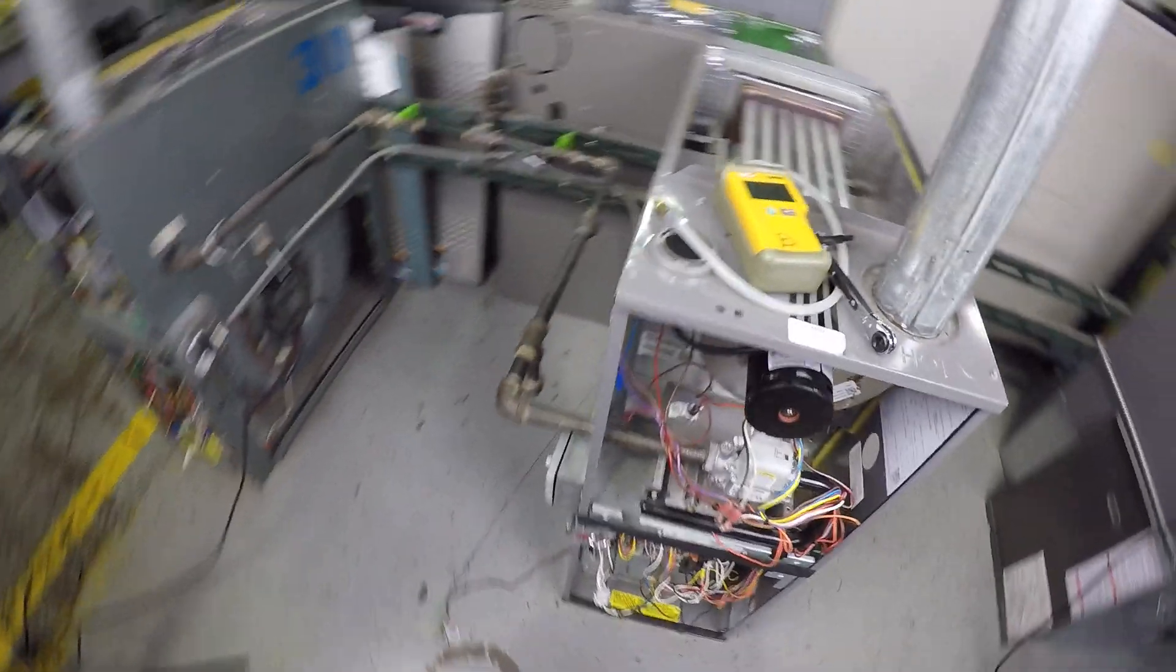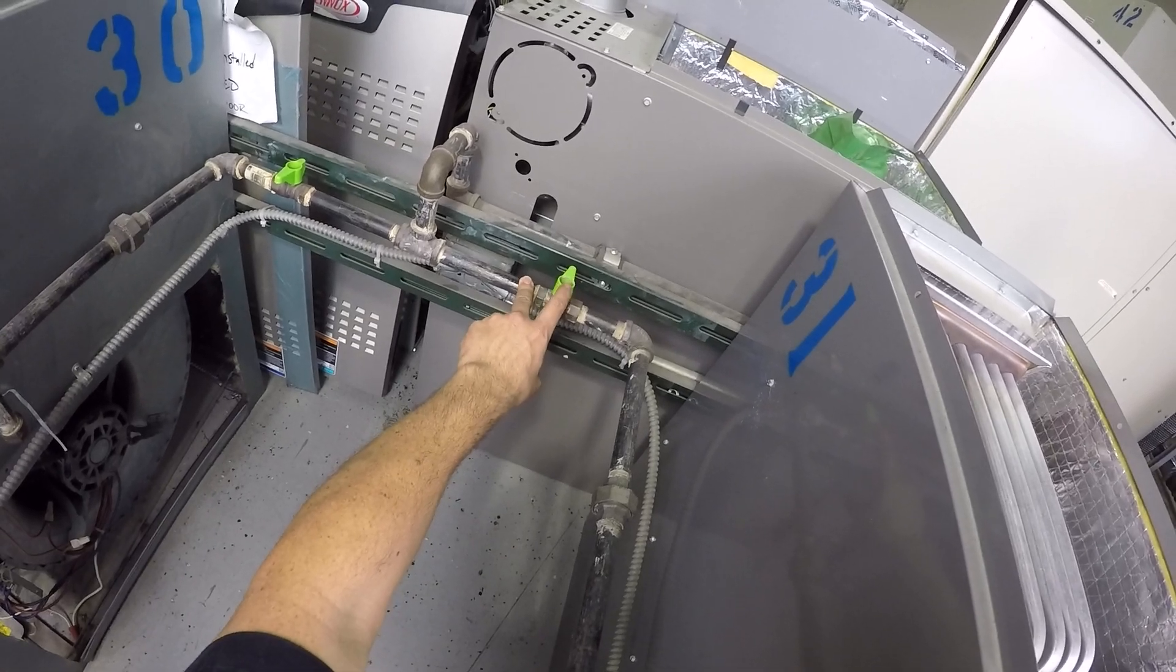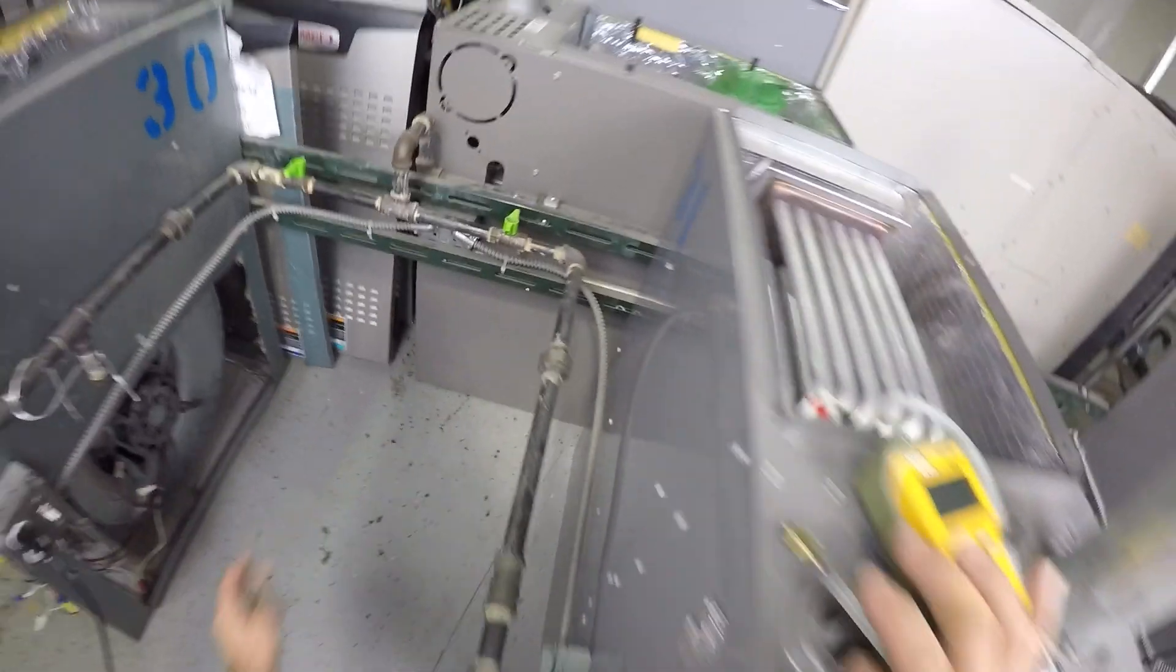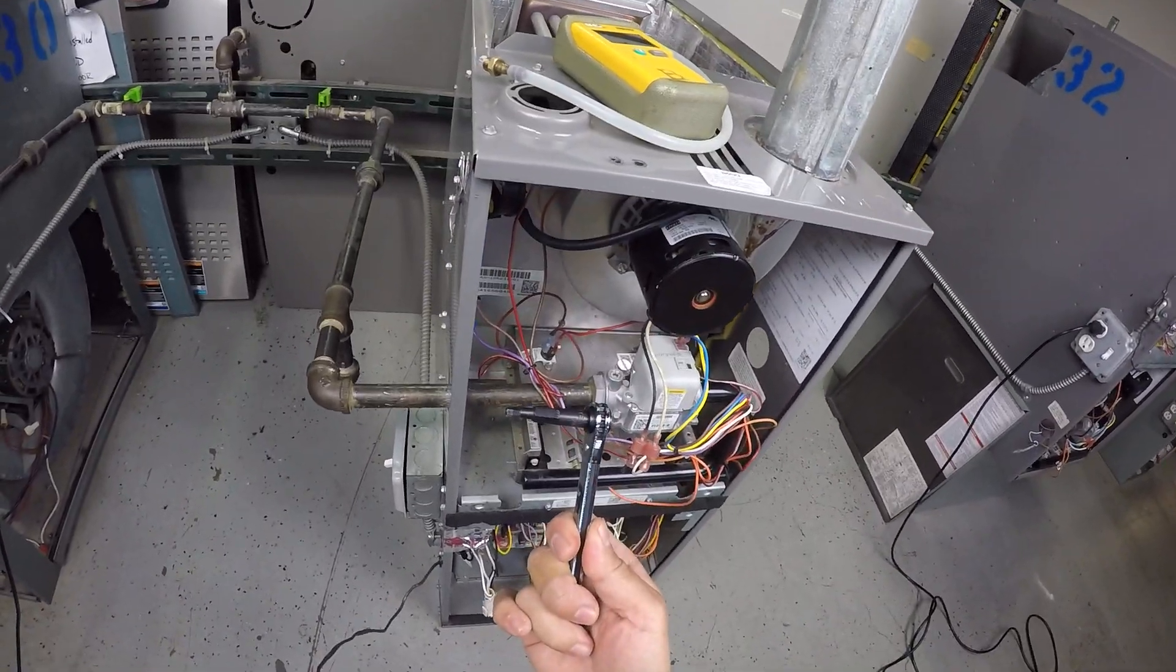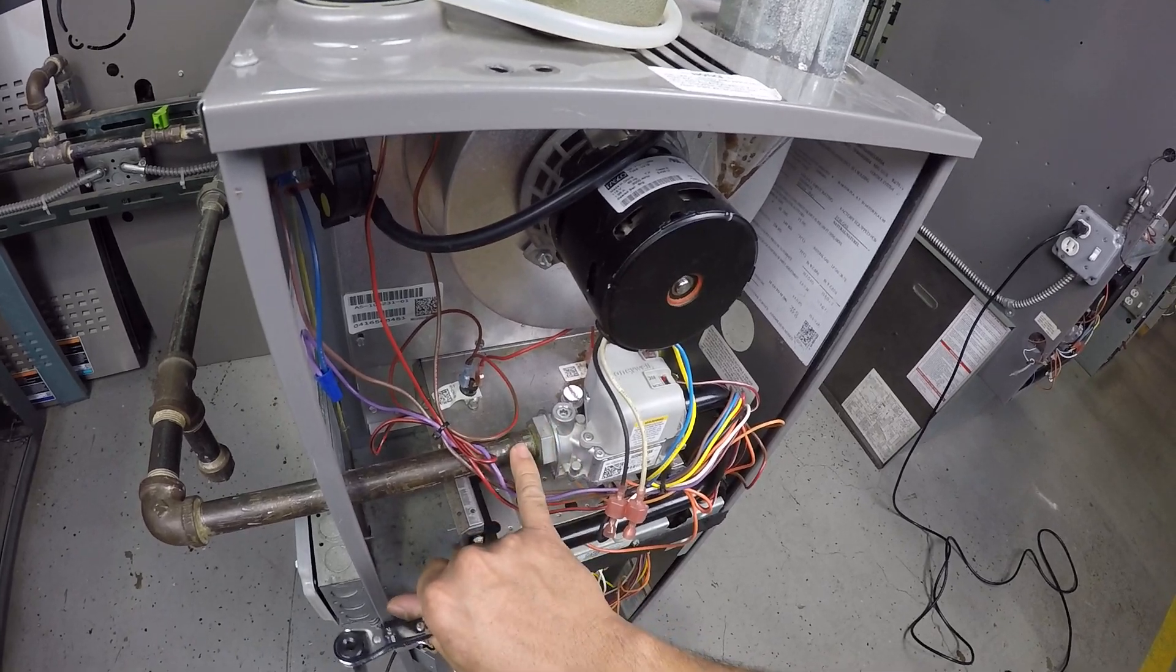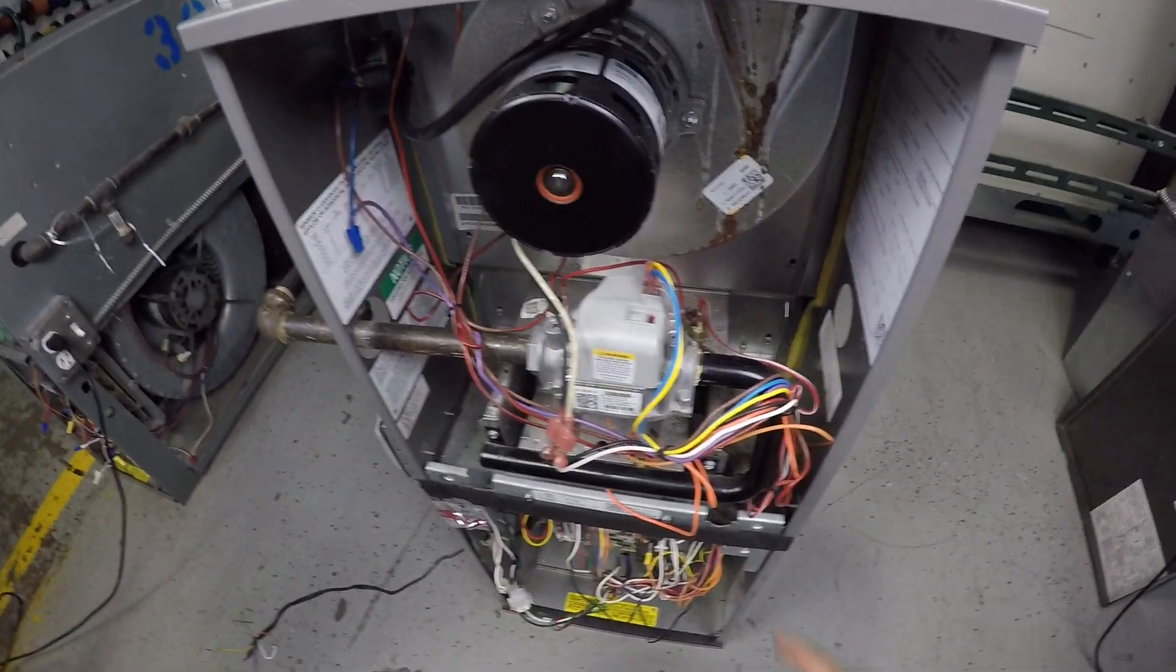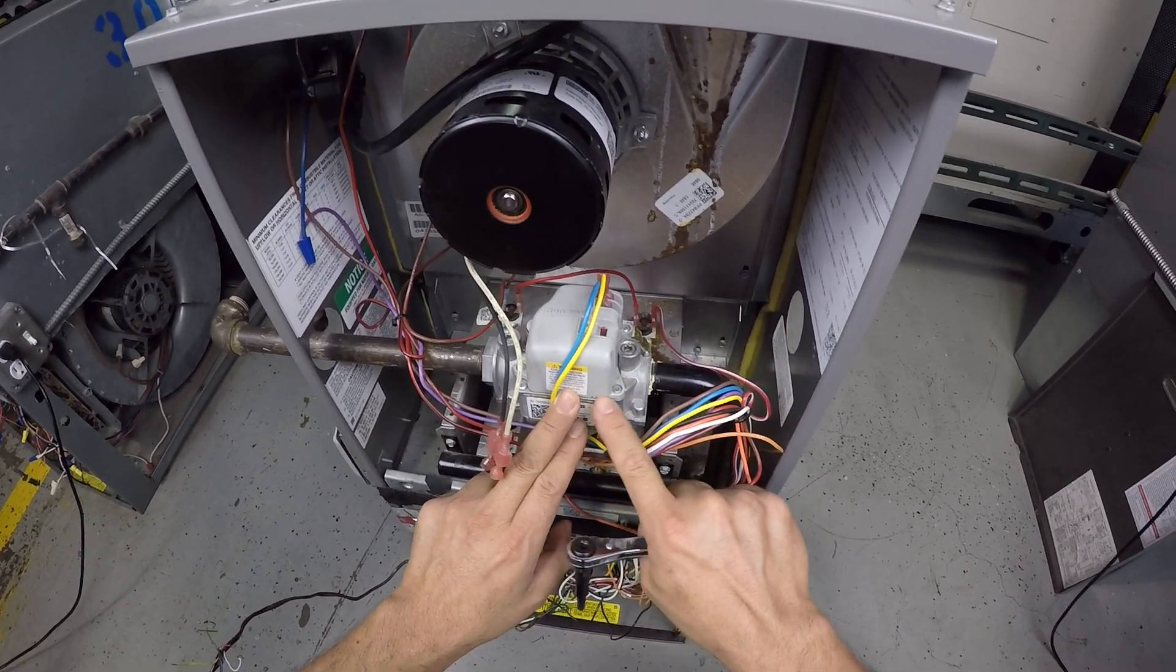So the first step for checking the gas pressure: first, make sure you have this valve closed. Make sure this is 100% closed. Second step is to grab your service wrench, and what you're going to do is remove a cap. There should be a cap right before the gas coming in, and also there should be a cap right after the gas valve.